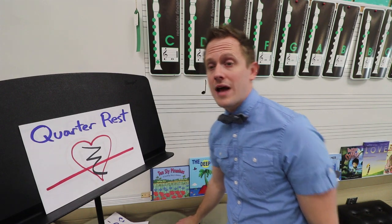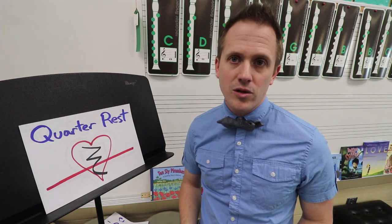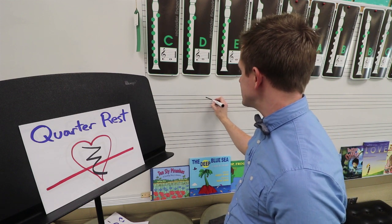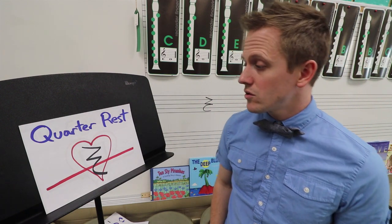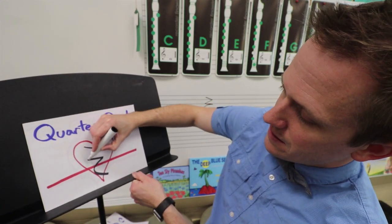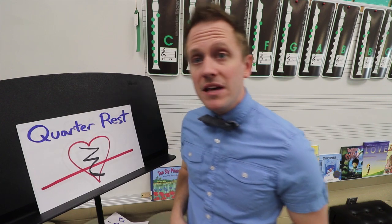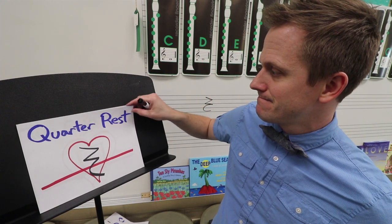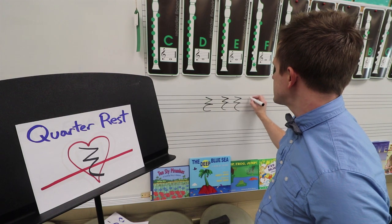Up next is a quarter rest. Quarter rests are pretty tricky to draw, just like treble clefs. But the good news is there's a trick: start by drawing a Z, then at the bottom of the Z, draw a C. Quarter rest — a Z and a C. A quarter rest is inside of a heart because quarter rests, just like quarter notes, fill in one whole beat. It's a beat of silence, but it still gets a beat. Why don't you write a couple quarter rests? They can be tricky, so you might need some practice.